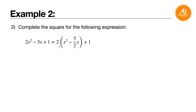In this case, you take out 2: 2 open bracket x squared minus 5 over 2 x, bracket, then plus 1. You just need to take out the common factor for the first two terms. The coefficient of x squared must be 1 when you perform completing the square. The third term, the plus c, you can just leave it outside — it won't be affected.